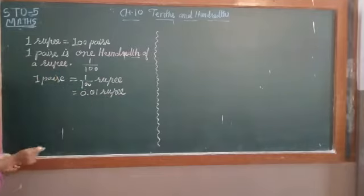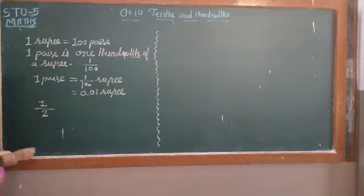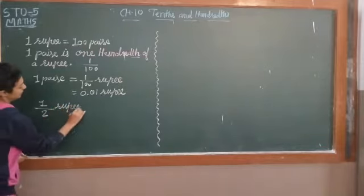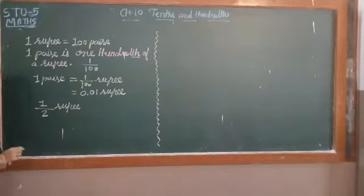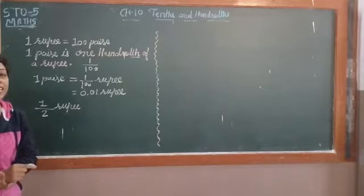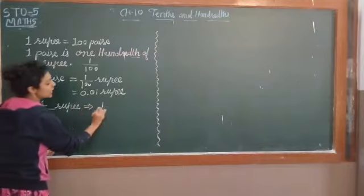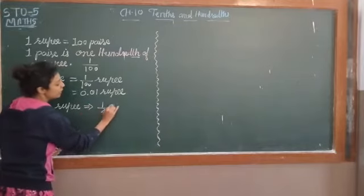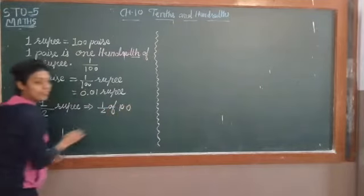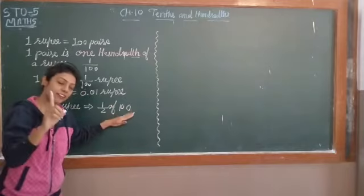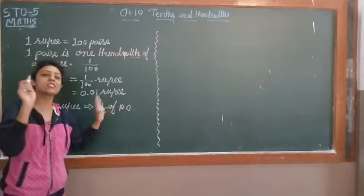Now let's look at example number 3: half rupee. Half rupee is equal to how many paise? Half means we can say half of 100. Half of 100 — 100 means 1 rupee, so half of 100.